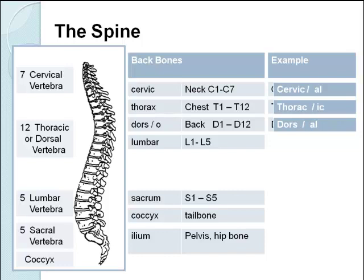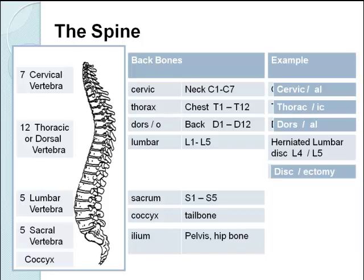The lumbar spine in the lower back is an area where many people have problems. One thing that can happen is called a herniated disc. Between your vertebrae you have discs of cartilage which allow the spine to move and be comfortable. If you have a herniated disc, the disc is bulging out and can push against some of the spinal nerves. A herniated lumbar disc can commonly occur between the fourth and fifth lumbar vertebrae. If somebody has a herniated disc, they may require an operation called a discectomy — ectomy is removal, and disc relates to disc.